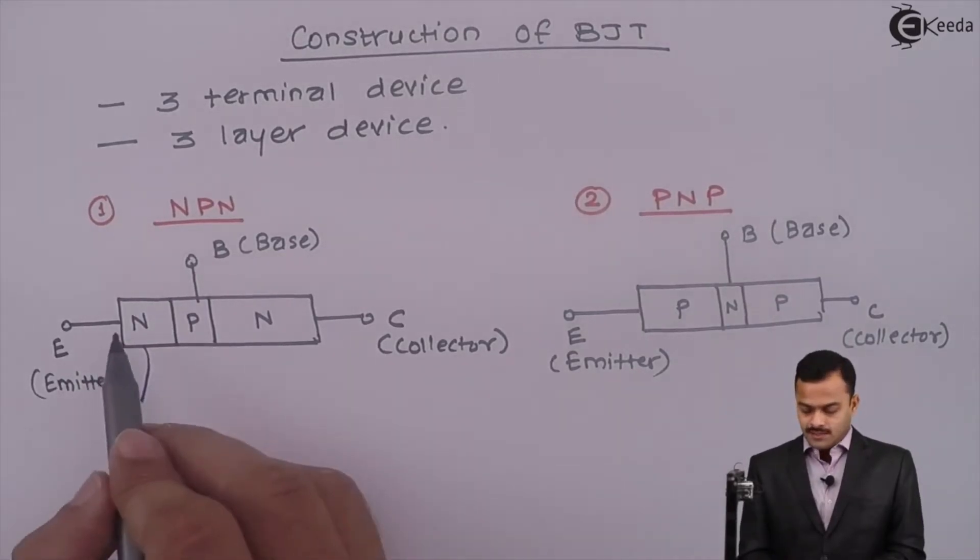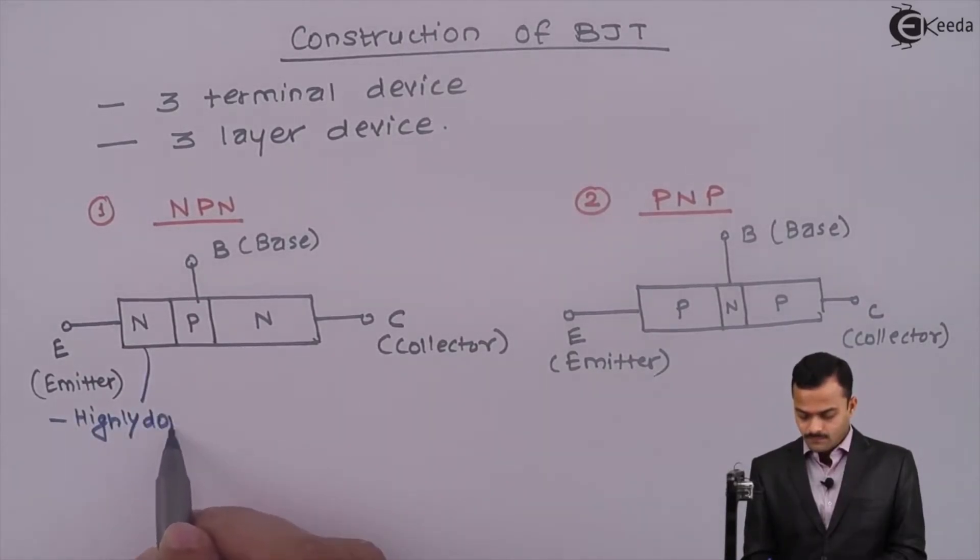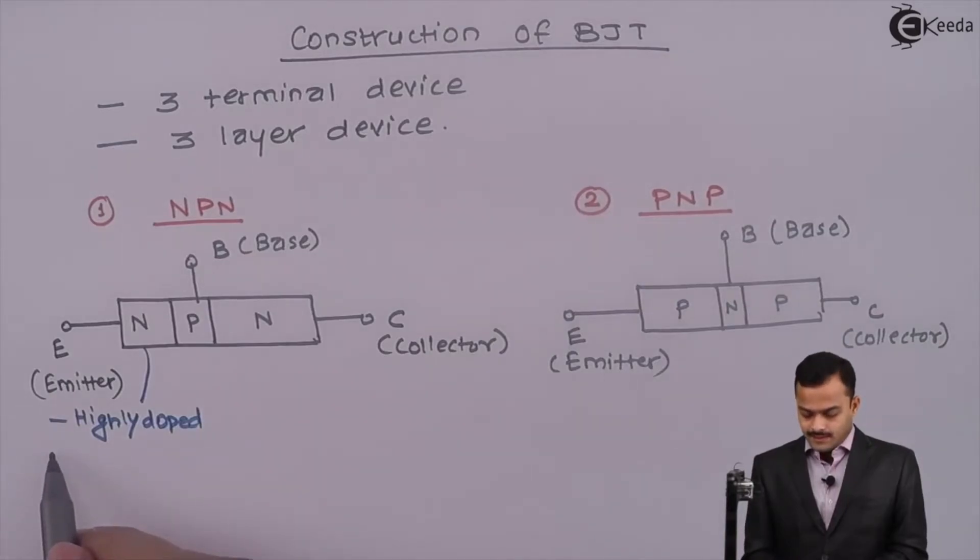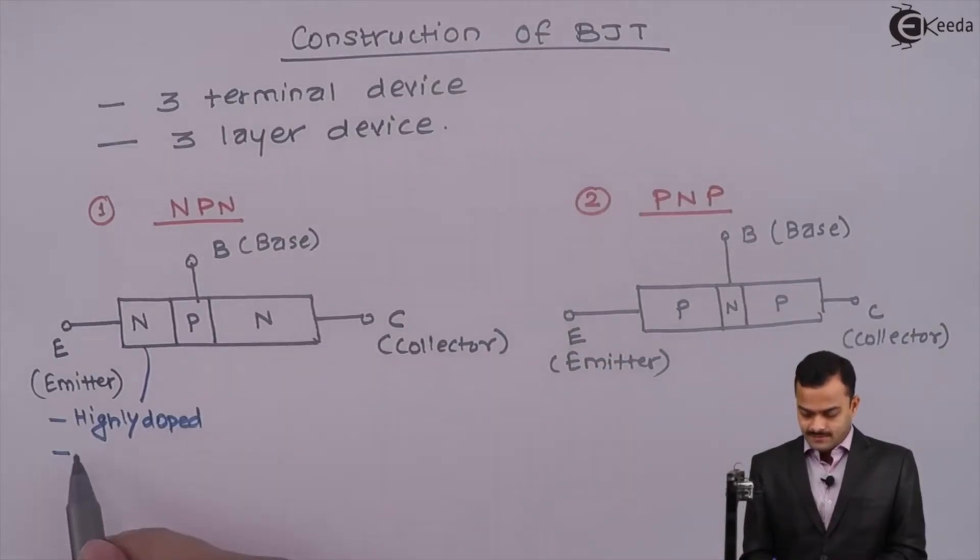For Emitter, the Emitter layer is highly doped and it has area greater than Base but little less than Collector. So I can say it is a moderate area.